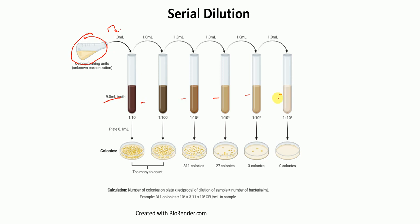In tube number 2, we take 1 ml from tube 1 and add it to 9 ml of media, giving a dilution of 1 to 100. In tube number 3, we take 1 ml from tube number 2 and add it to 9 ml of media, giving a dilution of 1 to 1000. In tube number 4, we take 1 ml from tube number 3, giving a dilution of 1 to 10 to the power 4. And in tube number 5, we take 1 ml from tube number 4, giving a dilution of 1 to 10 to the power 5.